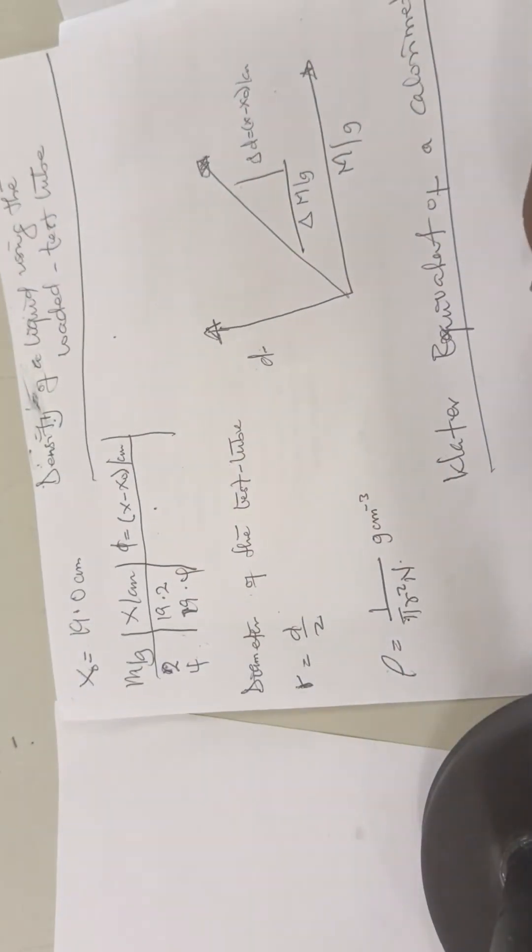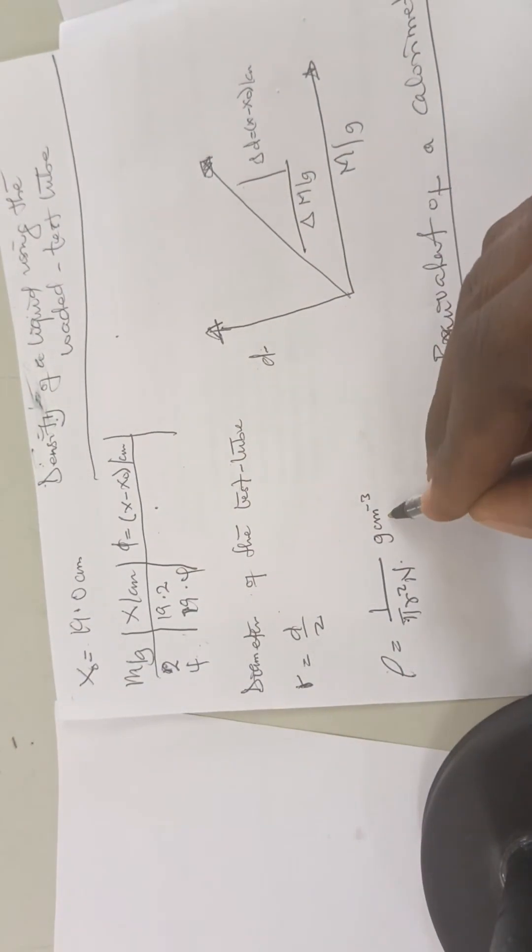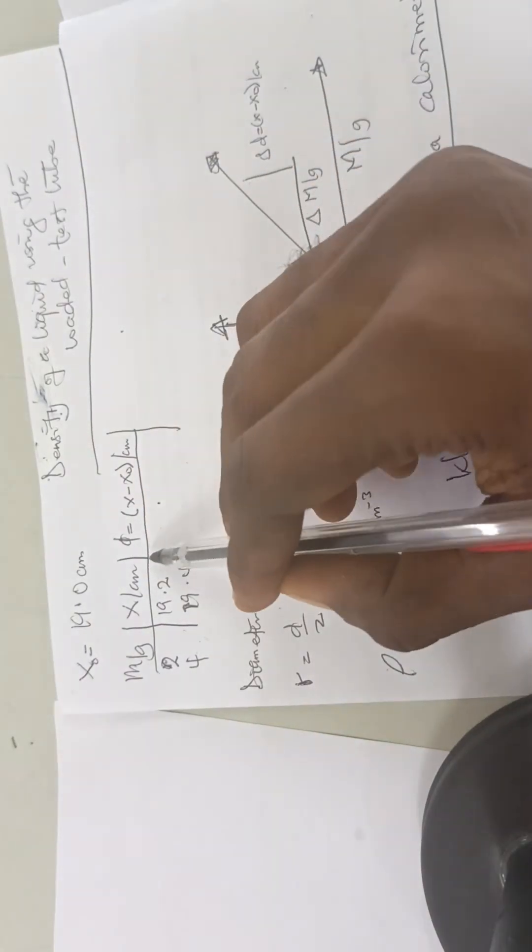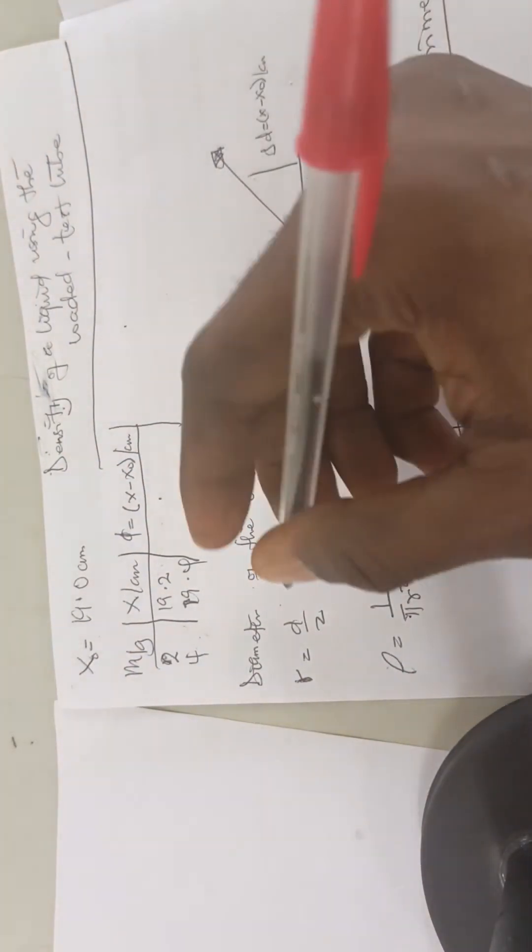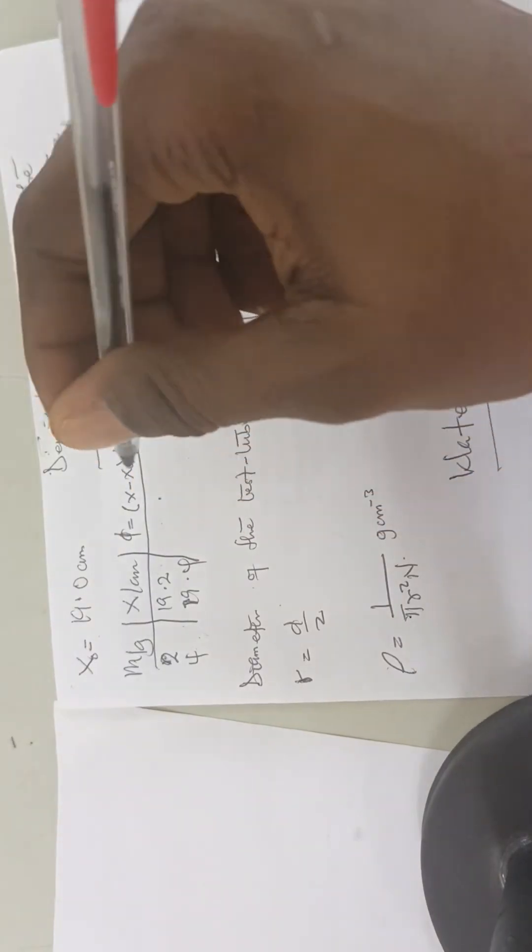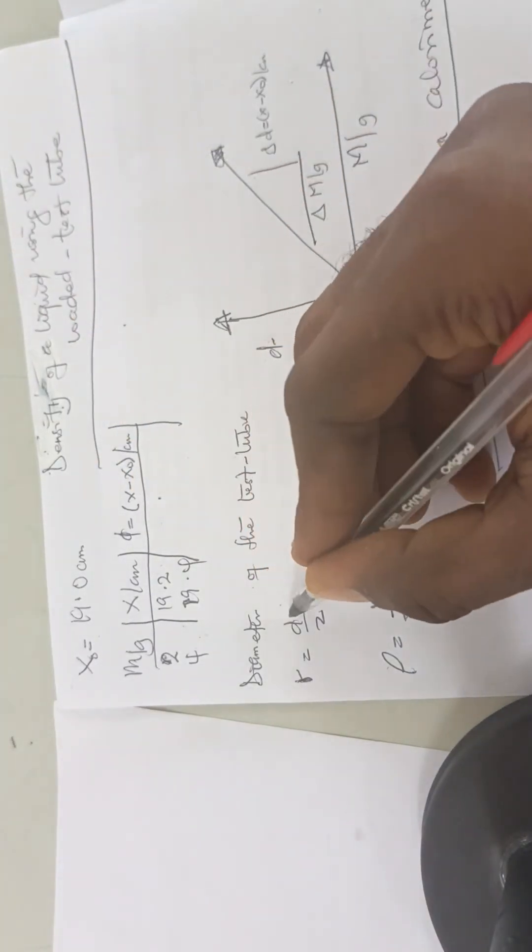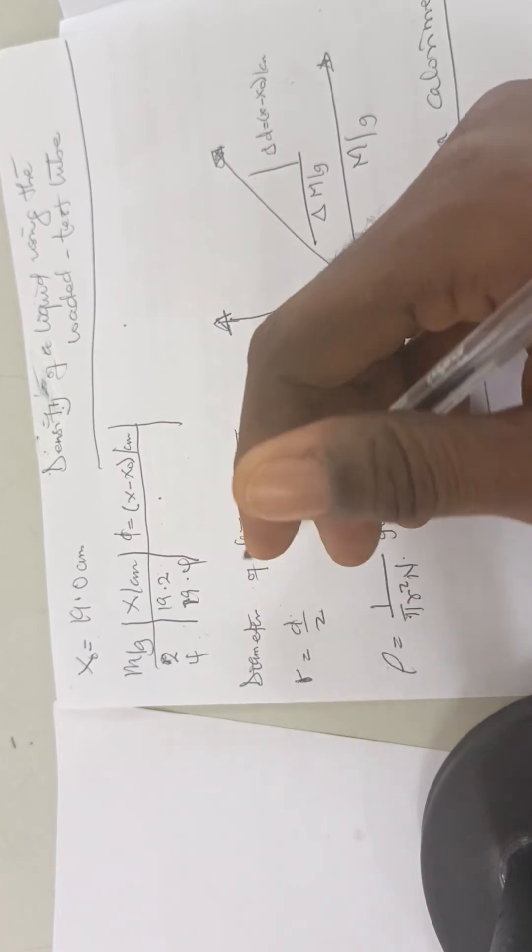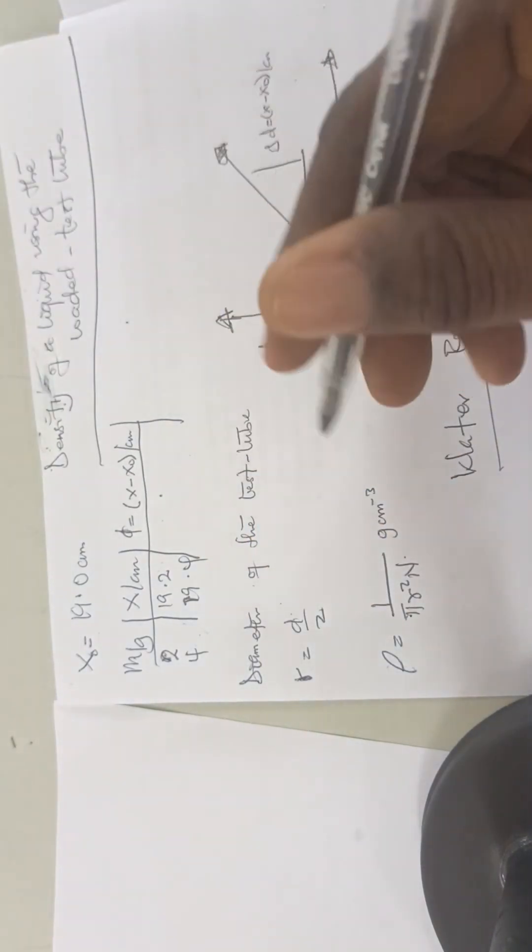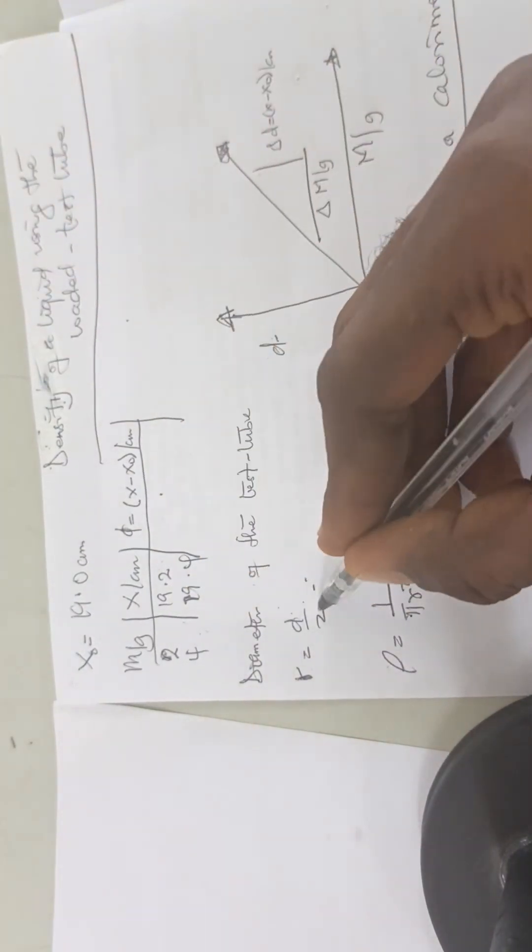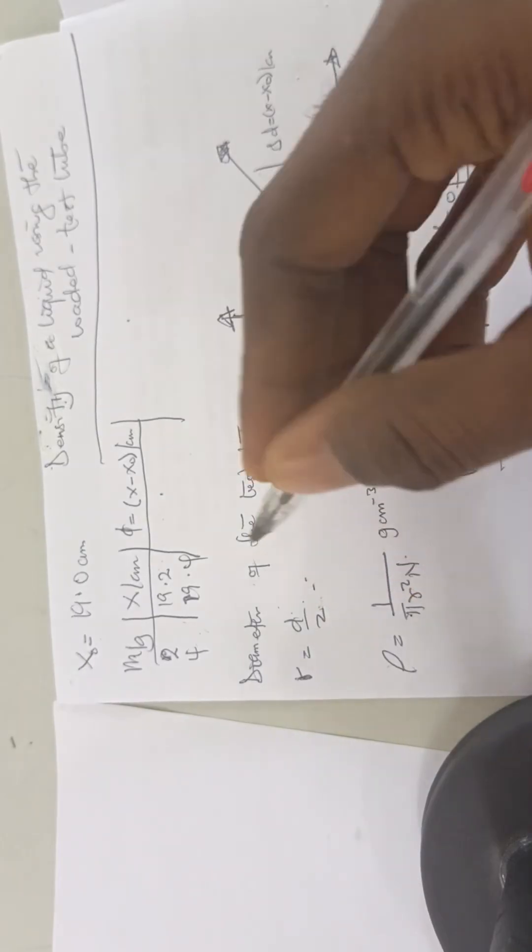The vernier caliper is in millimeters, so we need to convert it to centimeters because we are using centimeters. We divide the value of the diameter by two to get our radius, then we use the value of the radius here.